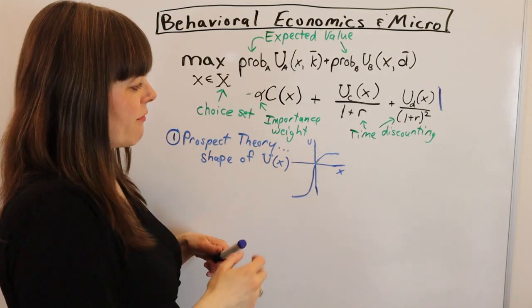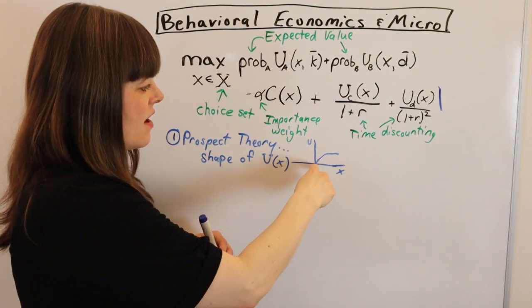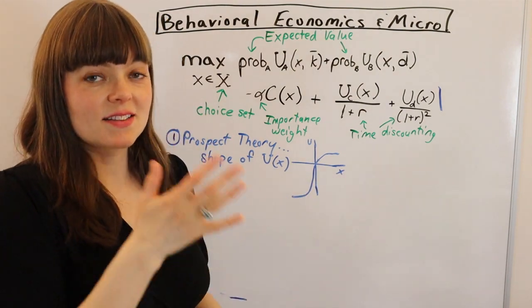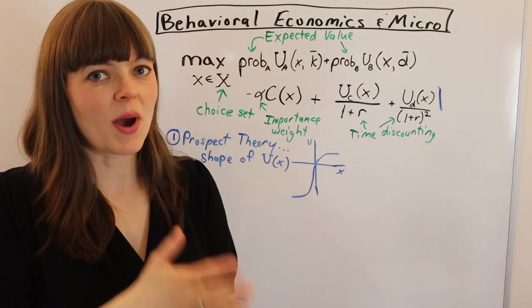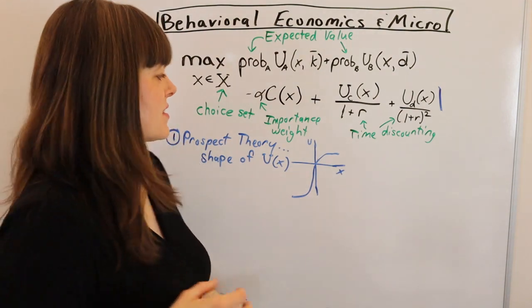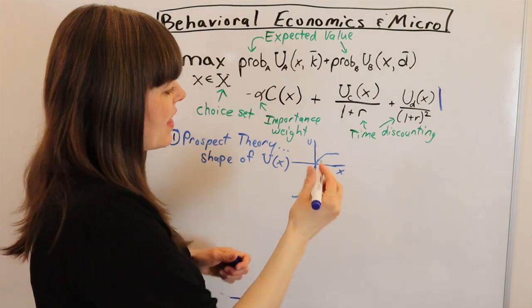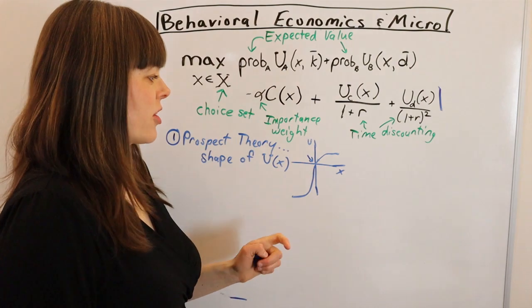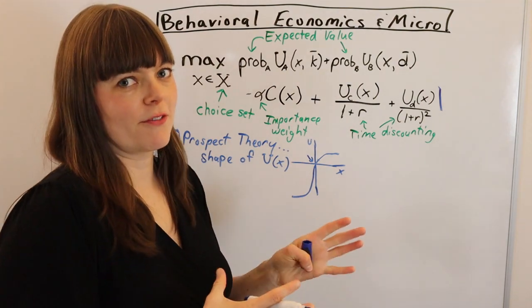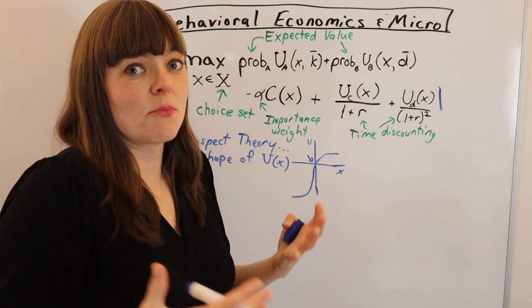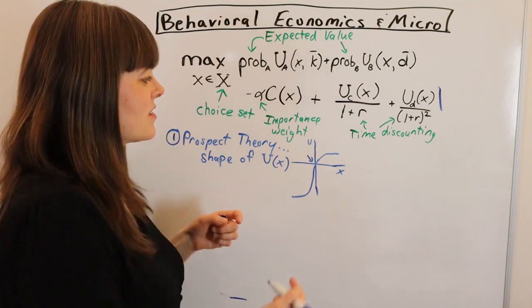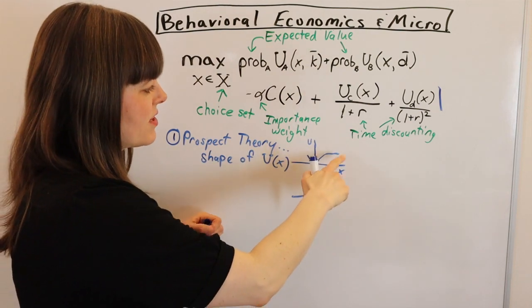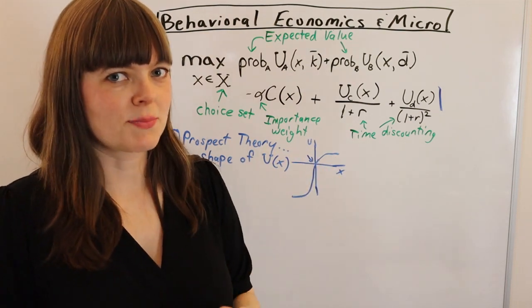Another feature is reference dependence, the fact that whether something is a loss or a gain depends on what your reference point is. Sometimes the reference point is how much you have and whether you're getting stuff or losing stuff. And sometimes the reference point, this point at the origin, is how much you expect. So it could be that you're getting more each year, but if you expected to get more than you got, you'll still experience that as a loss. So this reference point and the fact that there's a kink in the utility function at that reference point, that's going to be important with prospect theory.